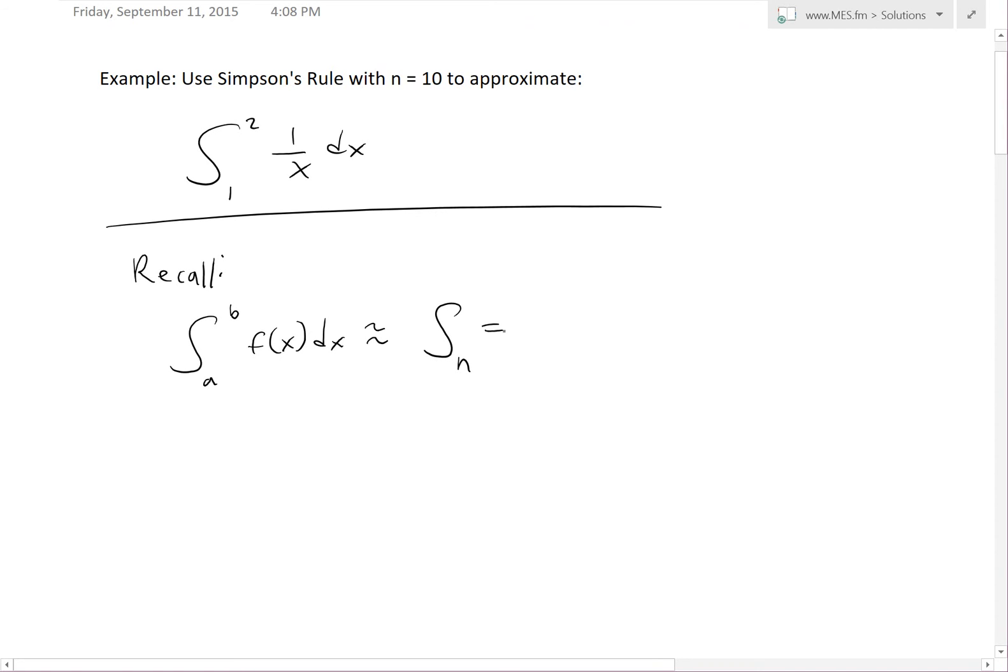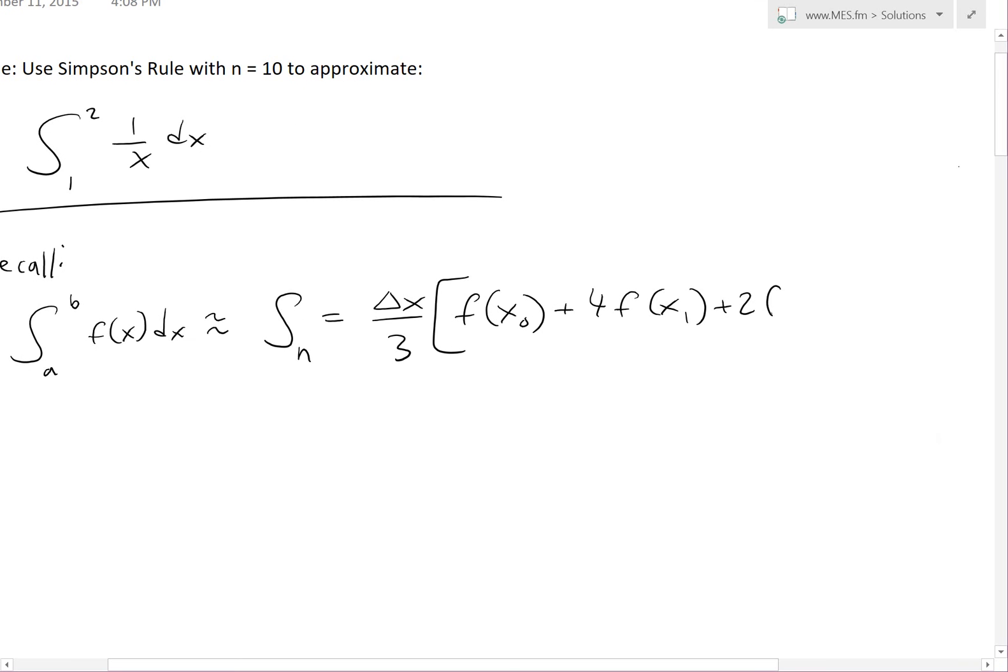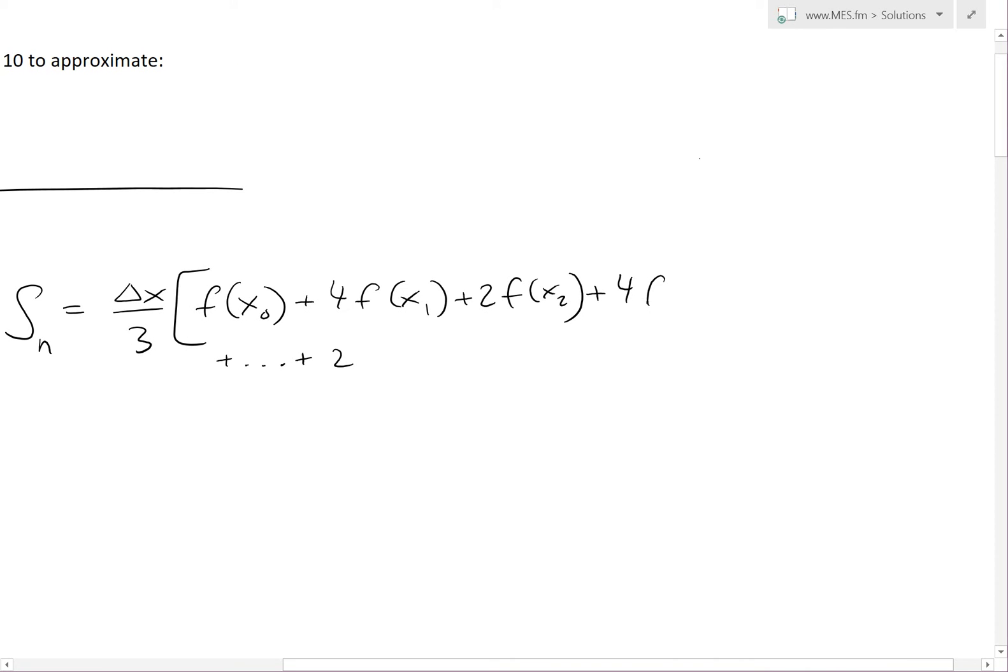First, we're going to recall Simpson's Rule where if you had a function integral from a to b of f of x dx, this is approximately equal to Simpson's Rule denoted by S_n with n intervals or subintervals, in our case it's 10. This equals delta x, the width of each subinterval, divided by 3. Then we had the pattern f of x_0.